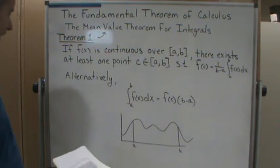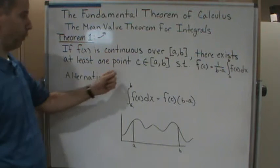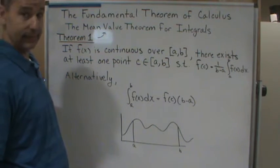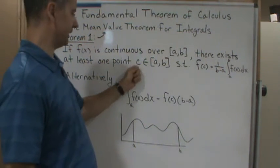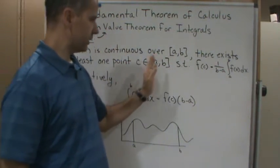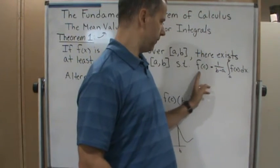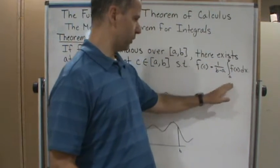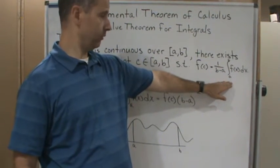What this is saying is that if f(x) is continuous over a closed interval, then there exists at least one point c in the interval such that f(c) equals this, which is the average value of the function.